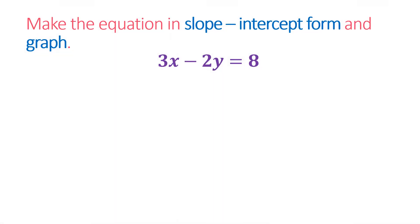Let's have an example. Make the equation in slope-intercept form and graph. The equation is 3x minus 2y equals 8.